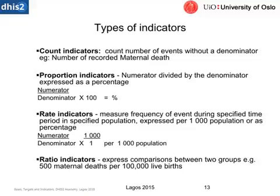Now the types of indicators. We have about four different types. We have count indicators — these are specific counts. An indicator can be a data element as a numerator over one, which means that the data element itself is the indicator. A count might also be a total of a number of data elements added together. Proportion indicators would be the numerator divided by the denominator expressed as a percentage — numerator over denominator times 100 — and then in our data visualizer we can just show that as a percentage.